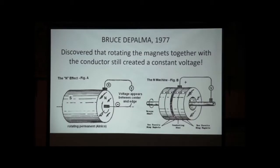In 1977, Bruce De Palma advanced the concept of the homopolar generator in a way where he did something that's not even really supposed to work. There's a lot of things that are common in this field that many of us seen that do work. So with this, he discovered that rotating the magnets together with the conductor still created a constant voltage.